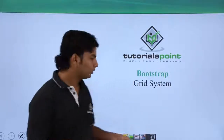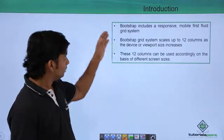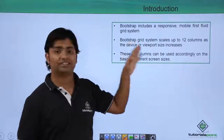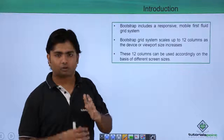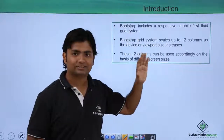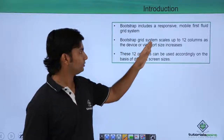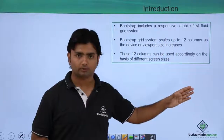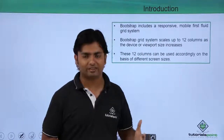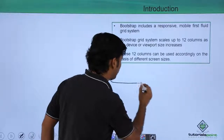Bootstrap includes a responsive mobile-first fluid grid system. All responsive web design is possible because of this grid system. Bootstrap grid systems scale up to 12 columns as the device and viewport size increases.